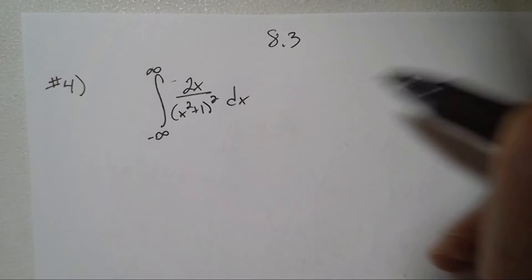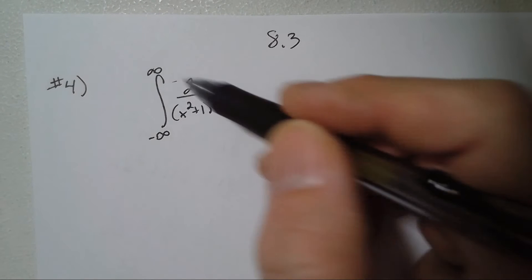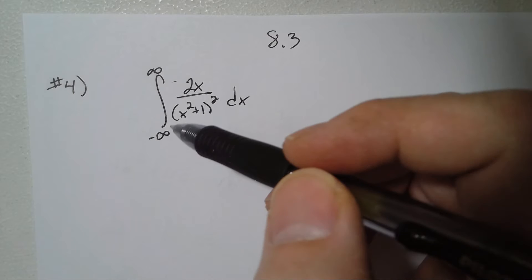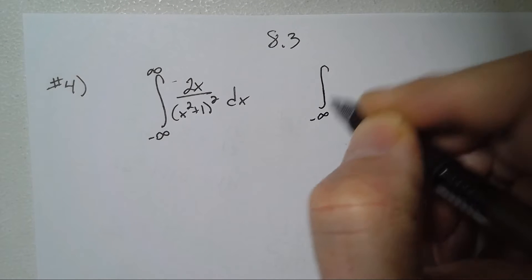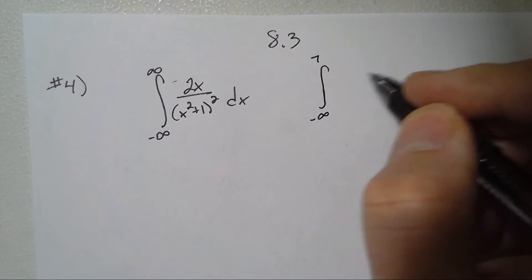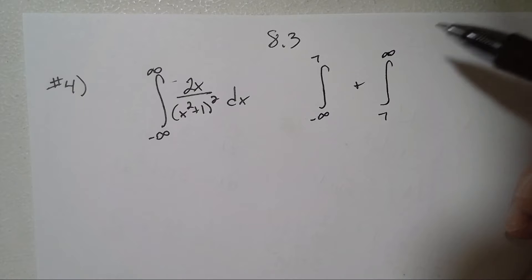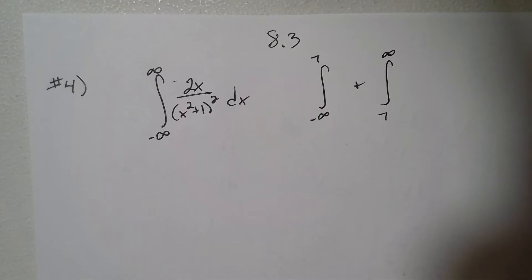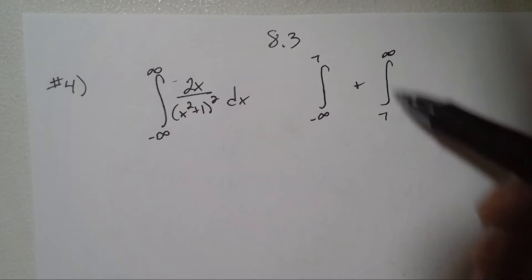If we're going from negative infinity to infinity, we have to choose a number in the middle. So we could integrate from negative infinity to seven and then add that from seven to infinity. We just need some number in the middle to produce two different integrals, because you can't have infinity on both ends of an integral.